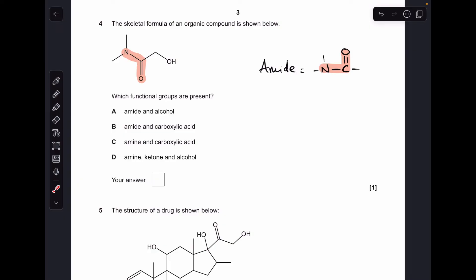Number four. The only tricky group in this is the amide group. Just remember, you need to have a nitrogen directly bonded to a C double bond O. So we've definitely got that in this molecule. And this other functional group here is an alcohol group. So A is the answer.